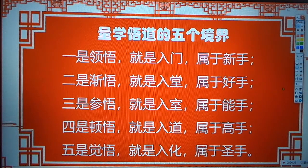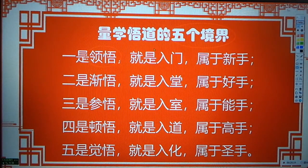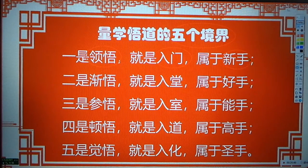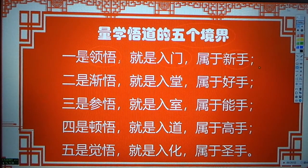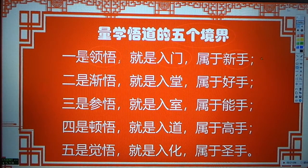今晚我要梳理一下，量学可以像围棋一样分段，和悟道的五个境界相匹配。什么叫做弱门呢？弱门就是一段的水平，新手的水平，必须精通量柱情障情。如果量柱情障情都没有能够精通的话，那其他的一切很难。本身来到股市做股票，首先要解决选股的问题。